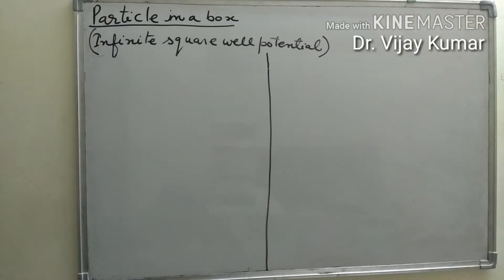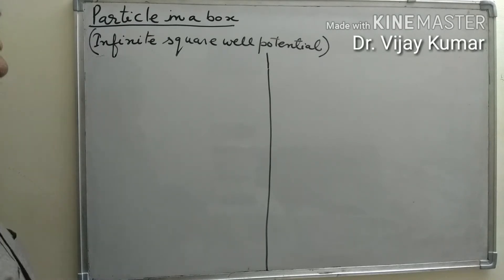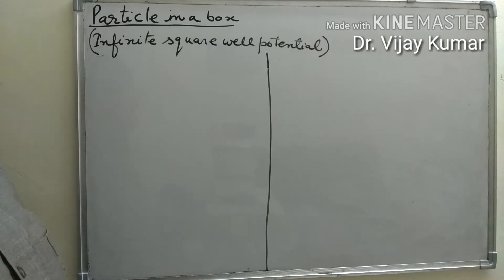Welcome to Part 3 video: application of the Schrödinger equation — particle in a box with finite square well potential. In this video we discuss the wave function and probability density of finding the particle inside the box.